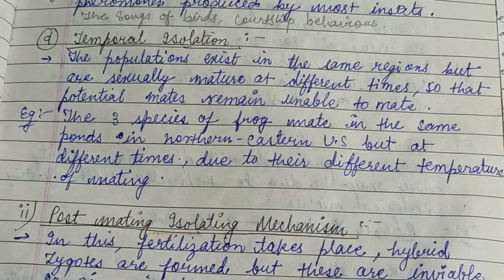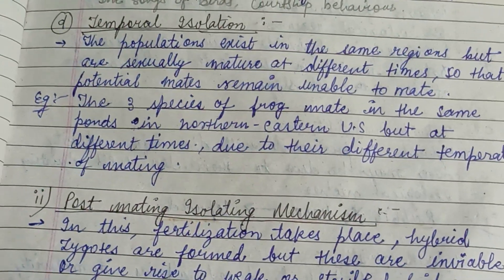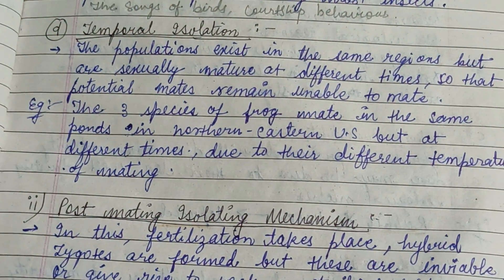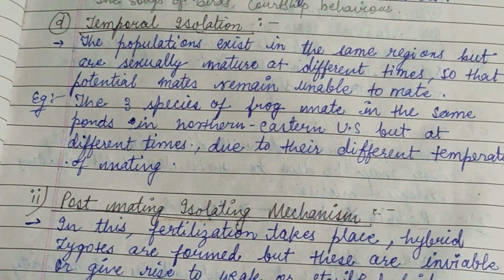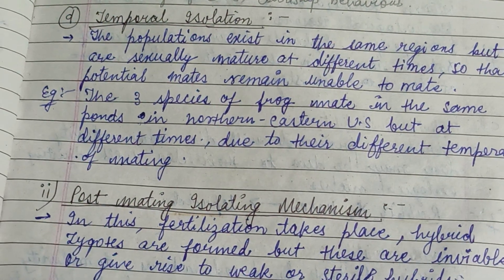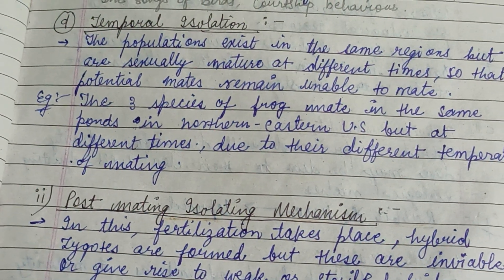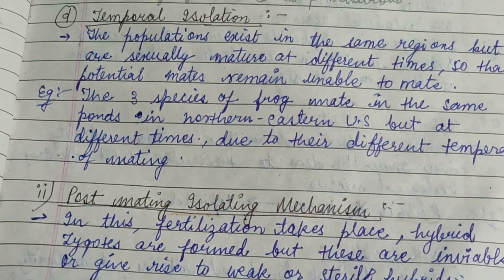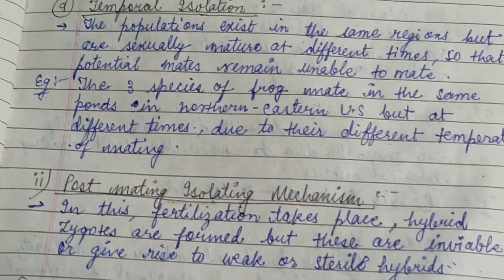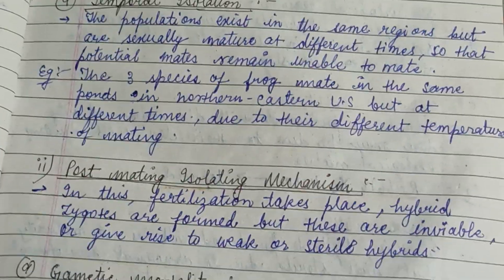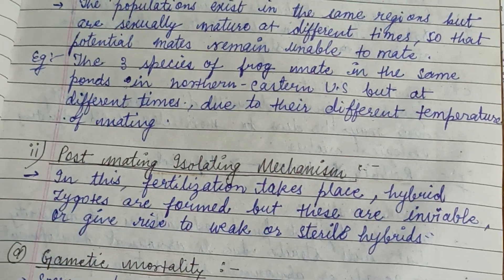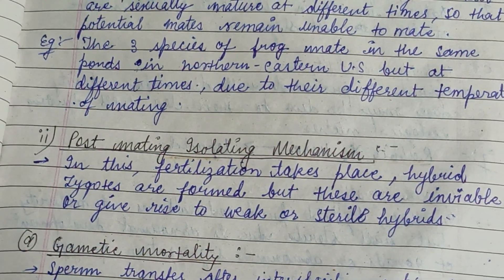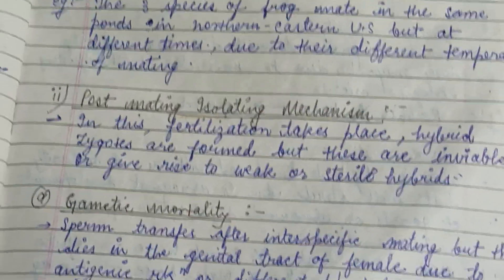Temporal isolation — in this isolation the potential mates meet but are unable to mate because maturation times are different and their breeding temperatures are also different. An example is the three subspecies of a frog in the northeastern US.